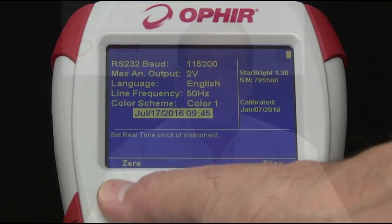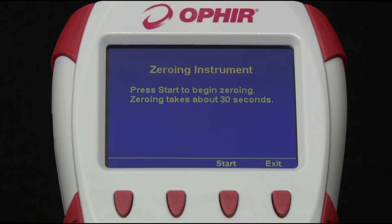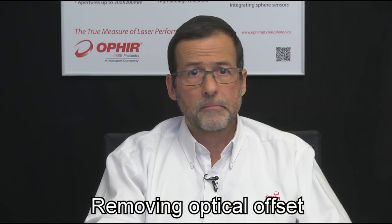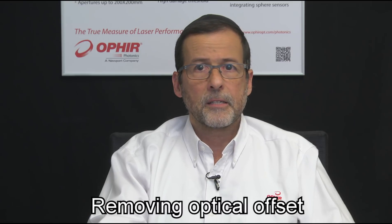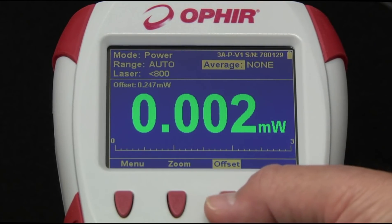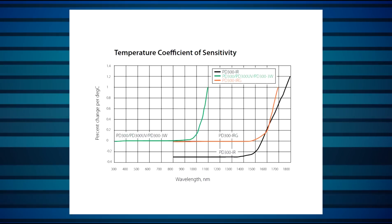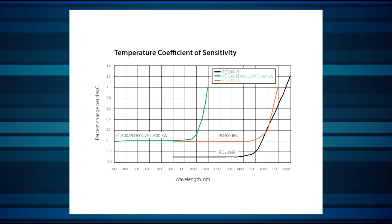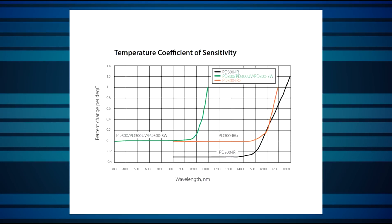For dealing with offset, zeroing the instrument removes electrical offset that builds up over time. We recommend doing this periodically, say every month or so. Optical offset — unwanted background light or heat — can be removed using the meter's offset function. Turn off or block the beam without affecting anything else, then check if the reading is in fact zero. If there's any offset, use the offset function to automatically subtract this value from subsequent measurements. For photodiode sensors, check that your measurement conditions won't cause temperature effects. Graphs of the relevant temperature sensitivity coefficients are found in our catalog and on our website.